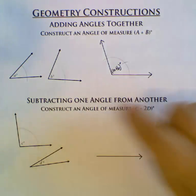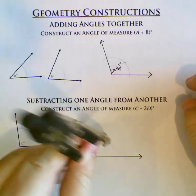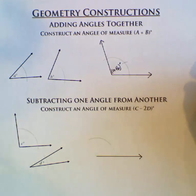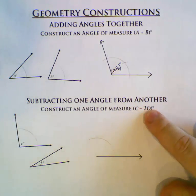Once I have that, I'm going to come over here and make an arc big enough to handle C, slightly obtuse. And I'm going to start with C because I'm doing C minus 2D.